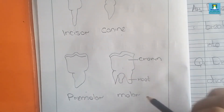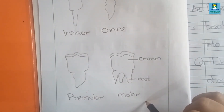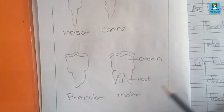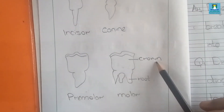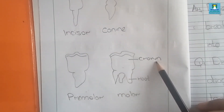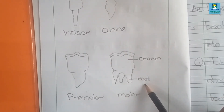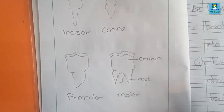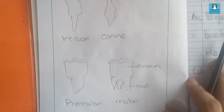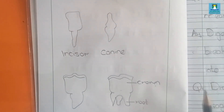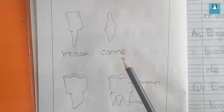The fourth one is molar. You can also label the crown — this part is known as the crown — and this part is known as the root. You can draw these four types of teeth: incisor, canine, premolar, and molar.